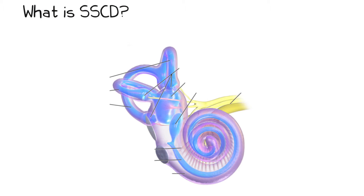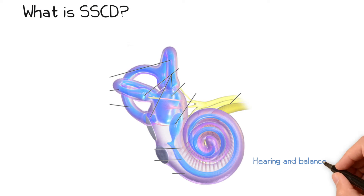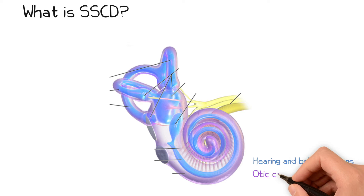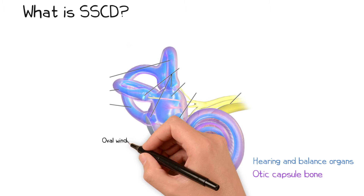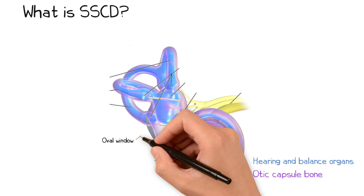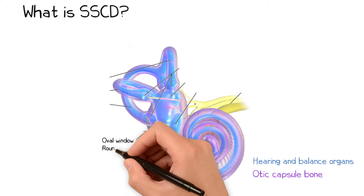The inner ear consists of the hearing and balance organs, which are surrounded by extremely dense otic capsule bone. This dense bone prevents sound from entering the inner ear from pathways other than through the oval window or, to a lesser extent, the round window.